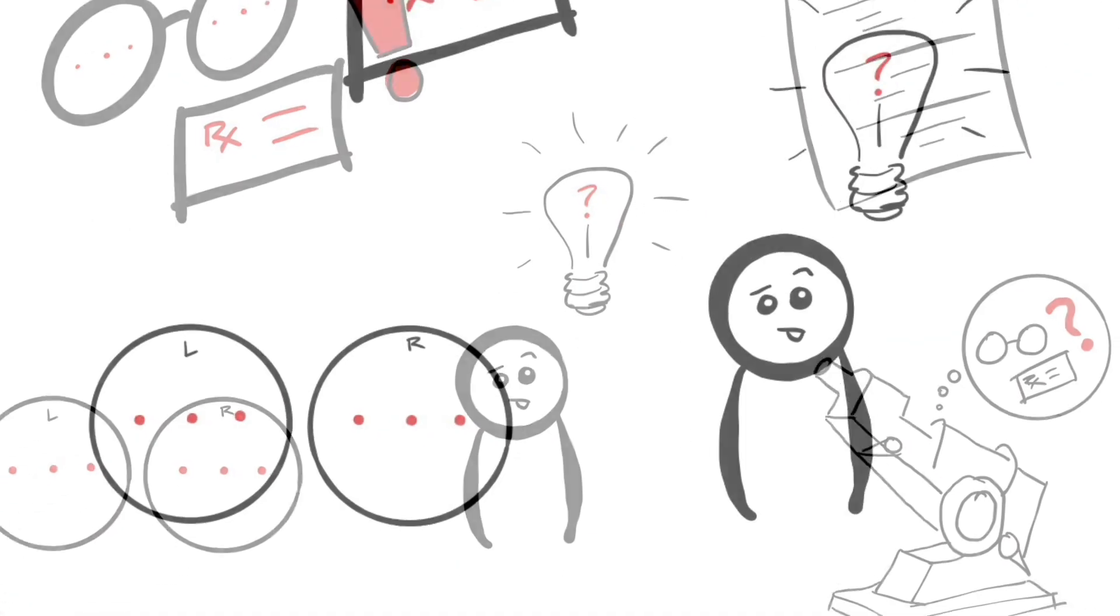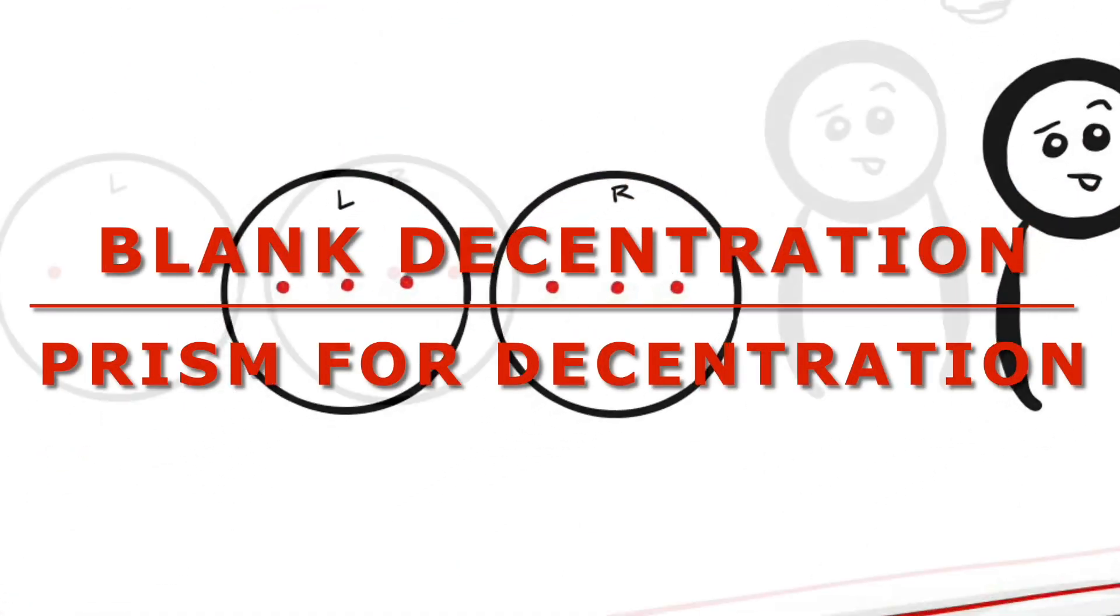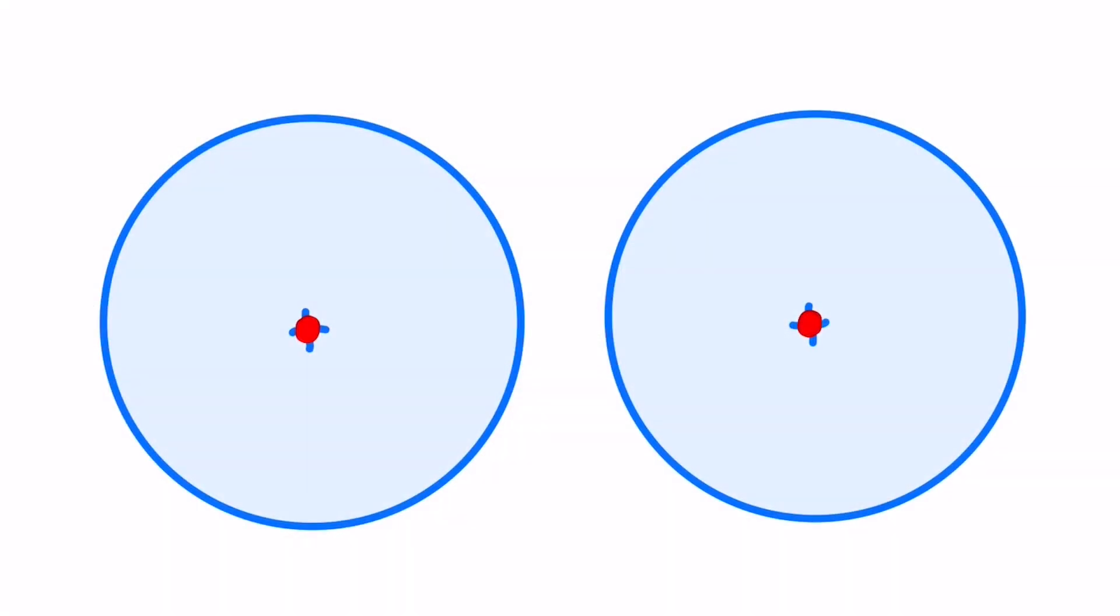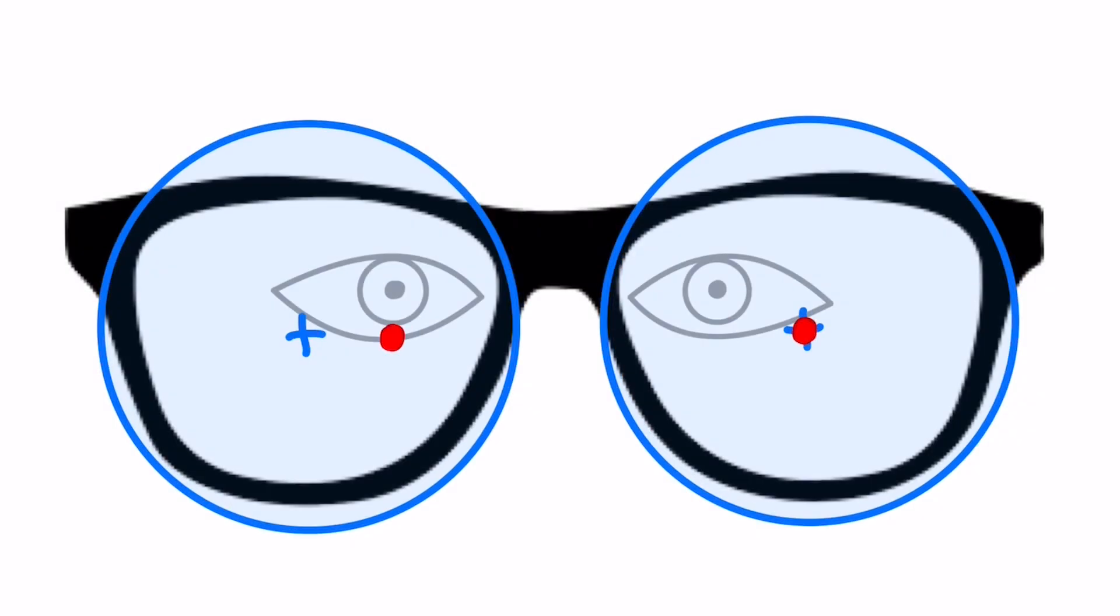Hello, in this video I'm going to show you how to calculate prism for decentration in the horizontal meridian. This surfacing technique can be used to position the optical center at the desired point on the lens blank.